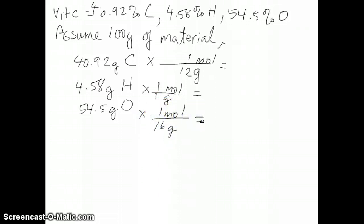So then we can do all these calculations. If you do that, what you get is 40.92 divided by 12 is 3.41 moles of carbon. This one would just be the same number, so 4.58 moles of hydrogen. And then this one would be 3.40625 moles of oxygen.